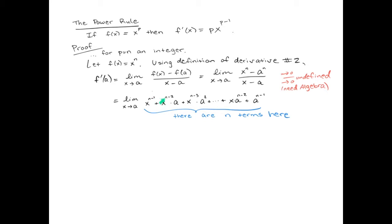Let's look at the next term, a^(n-2), and then multiplied times another a. In total, that's also a^(n-1).